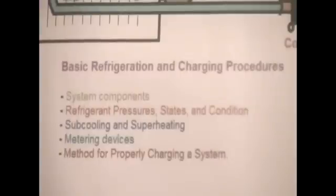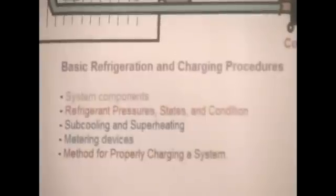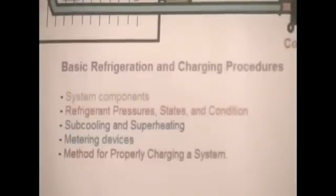As you see on your screen, we have five categories that we're going to go through in this training session. The first one is going to be the system components. The second one is going to be refrigerant pressure, state, and condition. The third one is going to be sub-cooling and superheat. The fourth is going to be the metering device. And the fifth one is going to be methods for properly charging the system. So we're going to go through each of them step by step. Let the training begin.